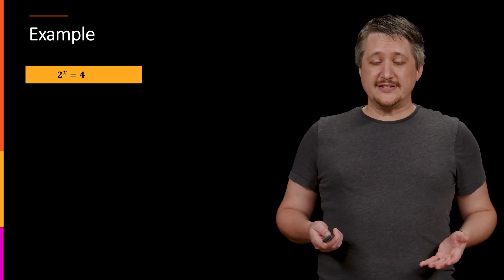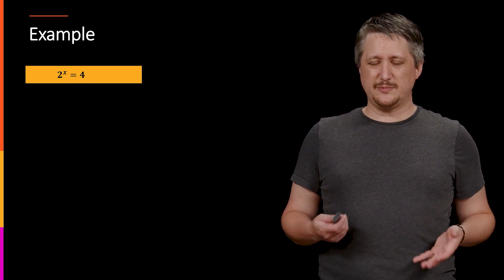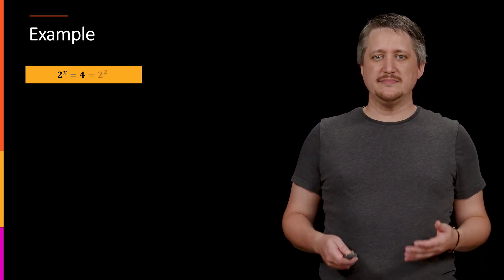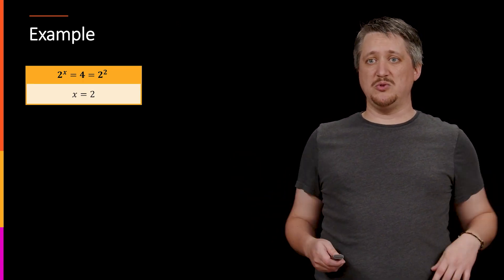As an example, if we have something like 2 to the x equals 4, well, this is pretty straightforward, right? We can say, okay, 4, that's really 2 squared, and then that one to one property means I know x is 2. Great, no problems.